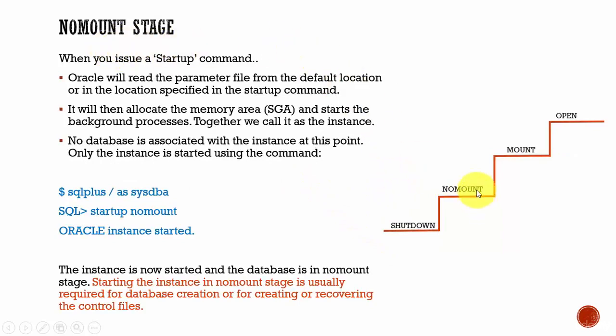The first step is the no-mount stage. Whenever you issue a startup command, Oracle will read the data from the parameter file from the default location, or you can manually mention the parameter file location while issuing the startup command. After reading the parameter file, it will allocate the Shared Global Area and start all the background processes. The Shared Global Area and all the background processes make up an instance. At this point, no database is associated with the instance — just the SGA and the background processes are started.